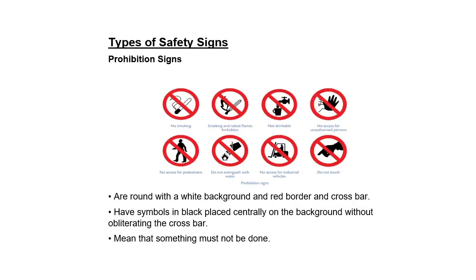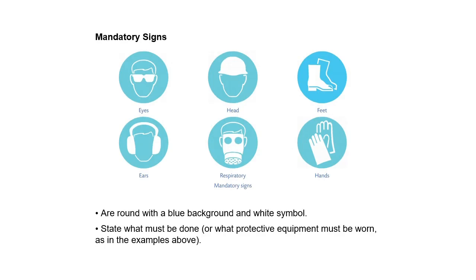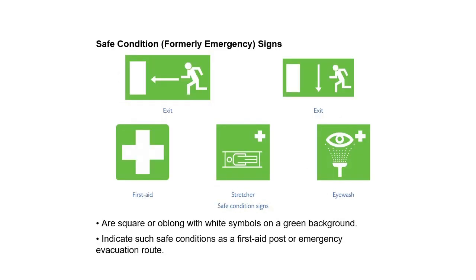Types of safety signs. Prohibition signs are round with a white background, red border, and crossbar, with symbols in black placed centrally on the background without obliterating the crossbar — meaning something must not be done. Mandatory signs are round with a blue background and white symbol, stating what must be done or what protective equipment must be worn.